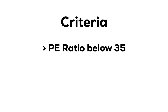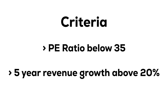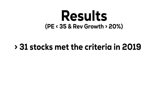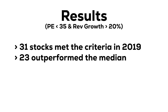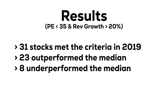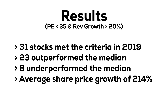I selected only those stocks which had a P/E ratio less than 35 and a five-year revenue growth above 20%. In theory, these should be reasonably priced stocks with a history of business growth. The result was a list of 31 stocks in which 23 outperformed the average and only 8 underperformed, with an average growth between 2019 and now of 214%. Pretty darn impressive.